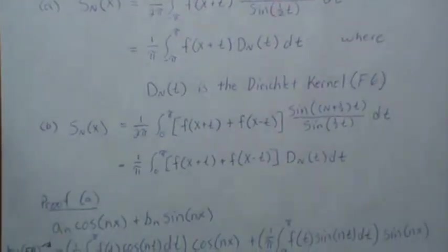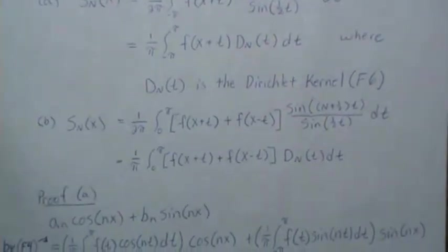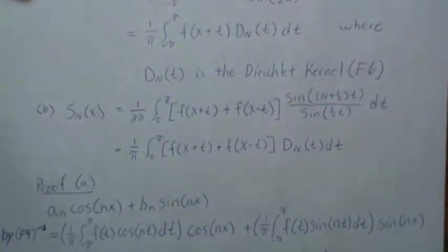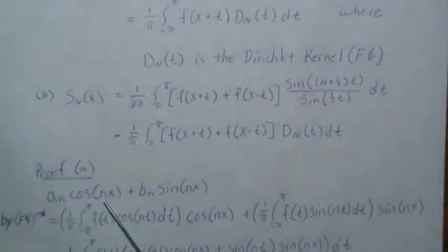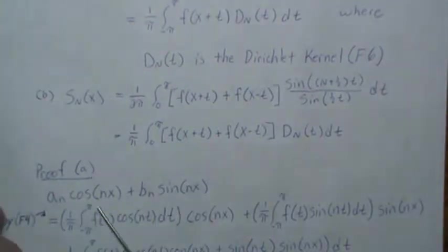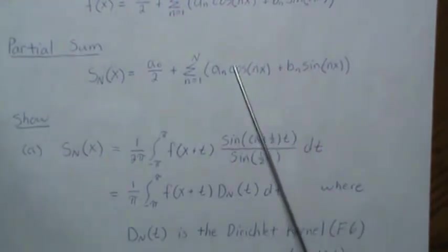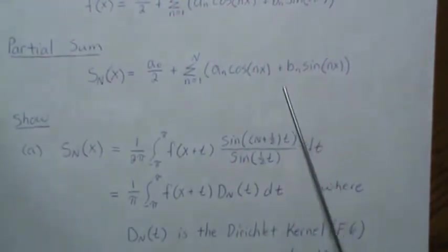Let's start in with proof A. We're going to first develop a trig identity. This piece here is part of the partial sum, going from one to capital N.